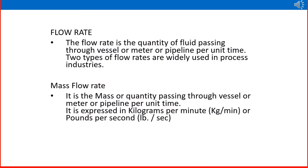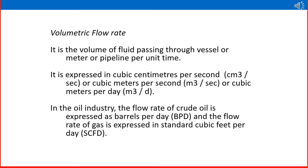Flow rate is the quantity of fluid passing through a vessel or meter or pipeline per unit time. Two types of flow rates are widely used in process industries. One is mass flow rate - the mass or quantity passing through vessel or meter or pipeline per unit time. It is expressed in kilogram per minute (kg/min) or pounds per second (lb/sec) or any other suitable unit representing mass and time.